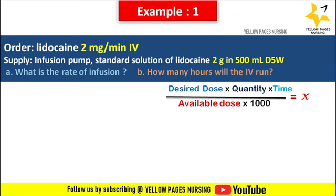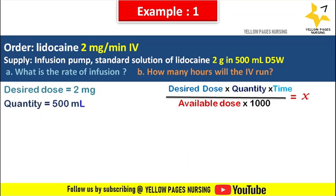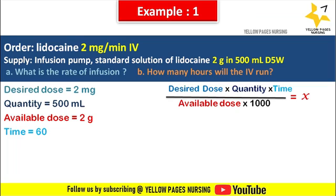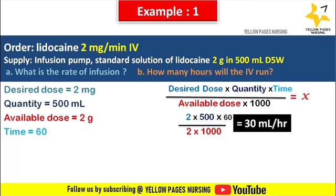Here the desired dose is 2 mg, quantity is 500 mL, available dose is 2 gram, and time is 60. To set the infusion pump we need ml per hour, and since lidocaine is ordered at 2 mg per minute, we multiply by 60 to get 120 mg per hour. So: 2 × 60 × 500 ÷ (2 × 1000) = 30 mL per hour. We set 30 mL per hour in the infusion pump.